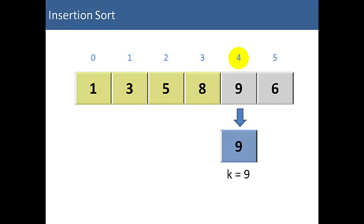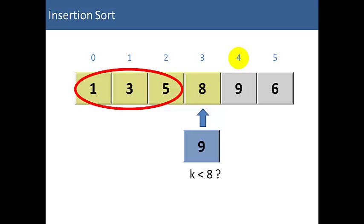So our next element in the list is 9. So we set k equal to 9. Our first comparison is k less than 8. Well, no it is not. And since we already know that all the items to the left of 8 are smaller than 8 because the list is sorted, then they're also less than 9. So we know that 9 is already done.